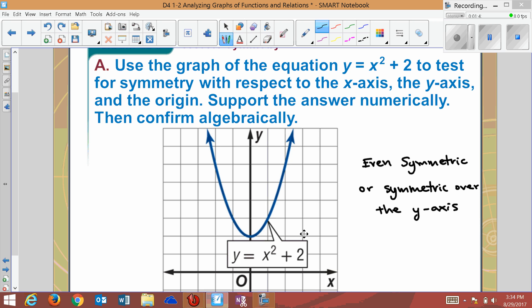All right. Let's look at another one. You can support it numerically by choosing any point. You see how this point reflects over to this point? Over here, this one is right two units. And it's up one, two, three, four, five, six.